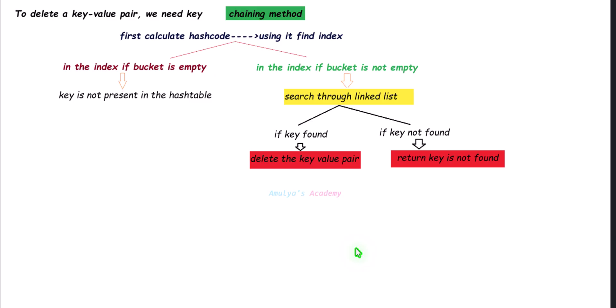Next, to delete a key-value pair when collision is handled using the chaining method: first calculate the hash code and find the index. If the bucket is empty, the key is not present — return that message. If the bucket is not empty, in the chaining method each slot is designed as a linked list. Search through the linked list; if the key is found, delete the key-value pair. If the key is not found after searching the entire linked list, return 'key not found.'